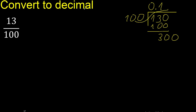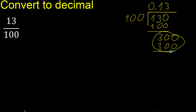100 multiplied by which number is nearest to 300? Multiply by 3 is 300. Subtract: 0. Therefore finish.